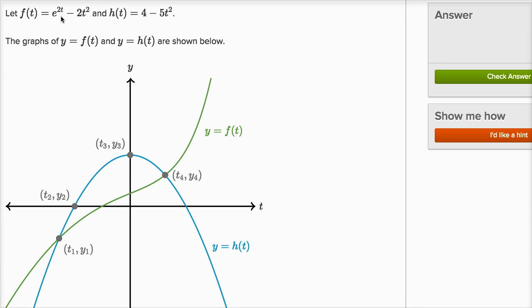Let f of t equal e to the 2t minus 2t squared, and h of t equal 4 minus 5t squared.